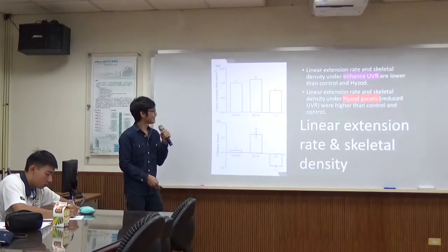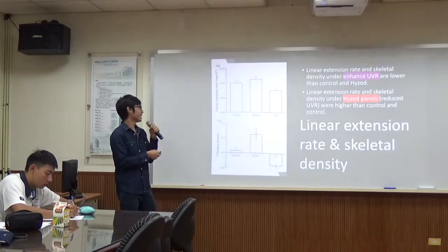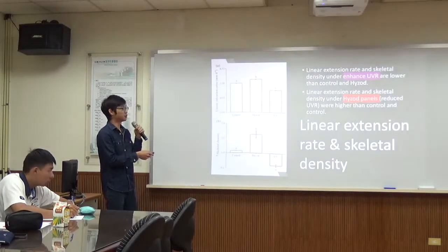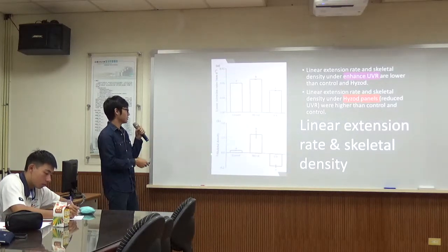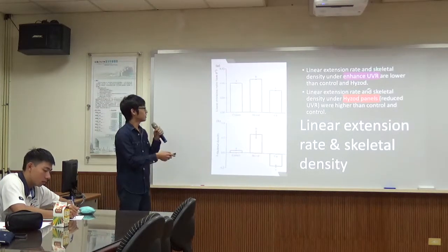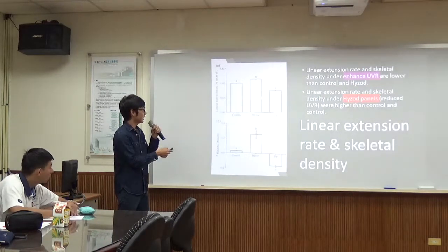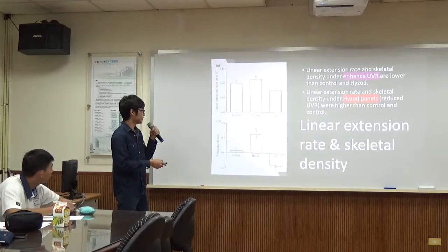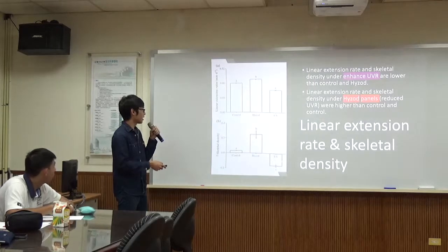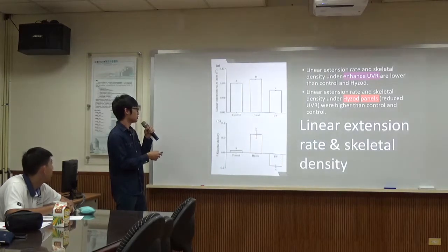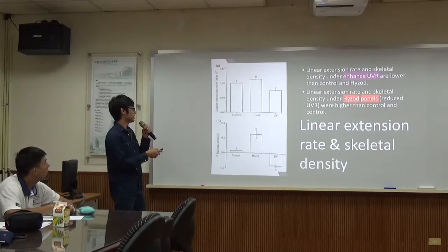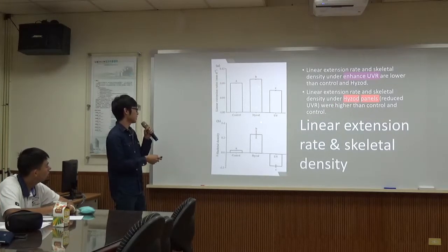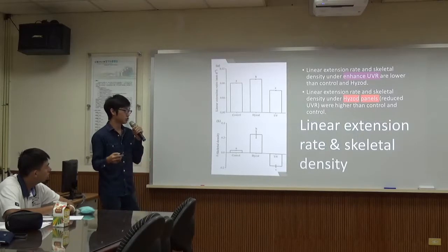Results. Look at this figure. The X axis shows 3 different treatments. The Y axis is linear extension rate and skeletal density. You can see under enhanced UVR, the linear extension rate and skeletal density are lower than the other two treatments. And under the UV-blocking panel, the linear extension rate and skeletal density are higher than the other two treatments.